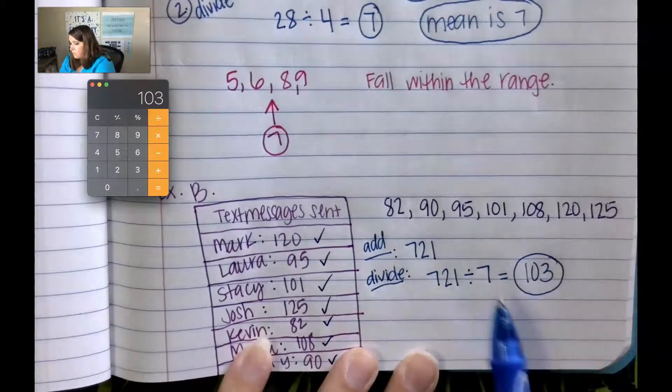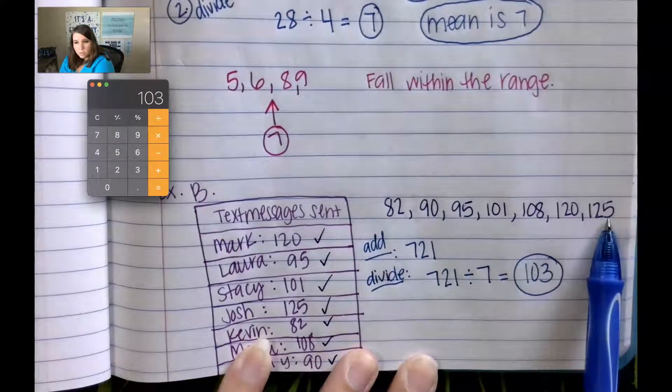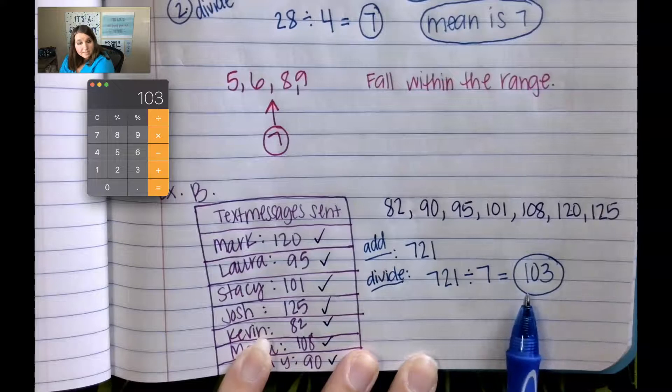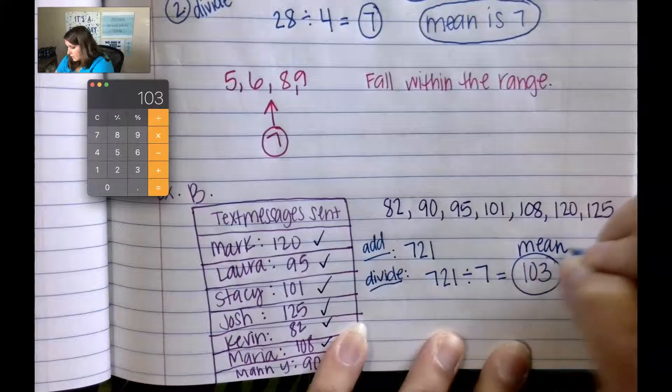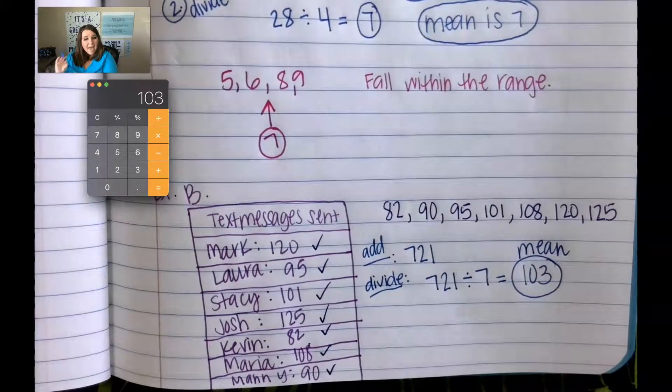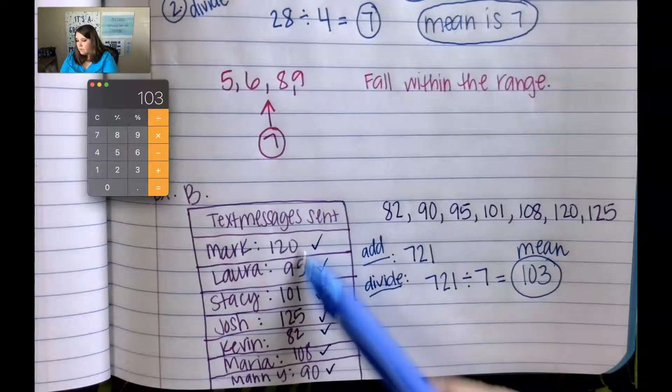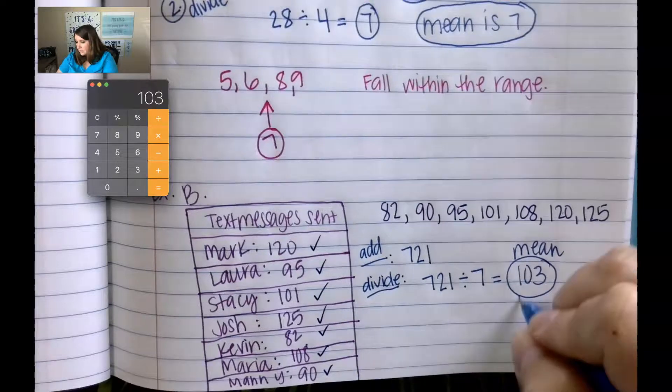Does 103 fall within the range? Is it between 82 and 125? Yes, it does fall within the range. So this is our mean. 103 text messages is the average of our data points.